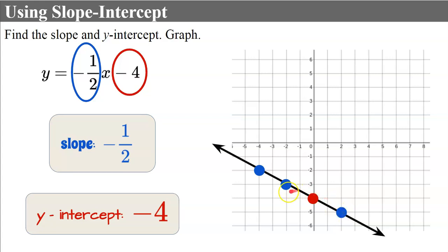I did more than one point, but you only need two points to graph a line — I was just showing how rise and run works. You could also input values for x to solve for specific outputs and graph those points.